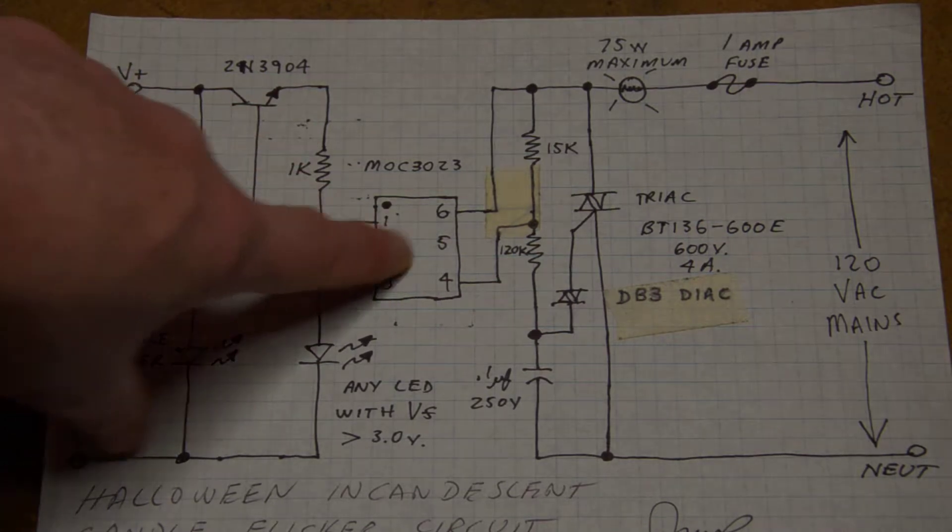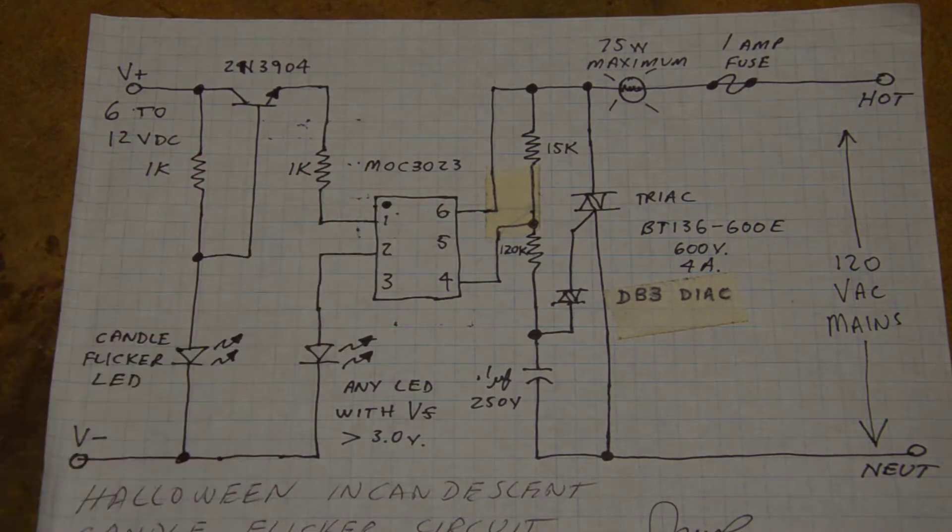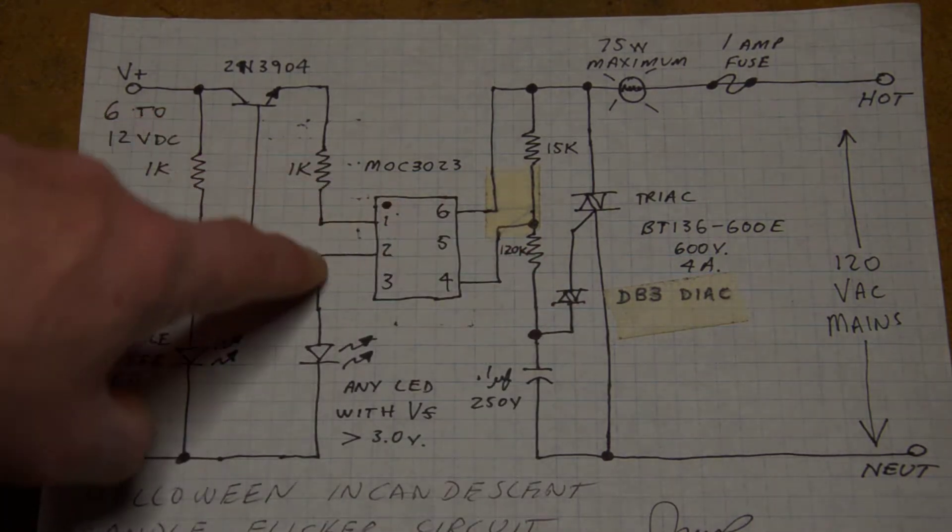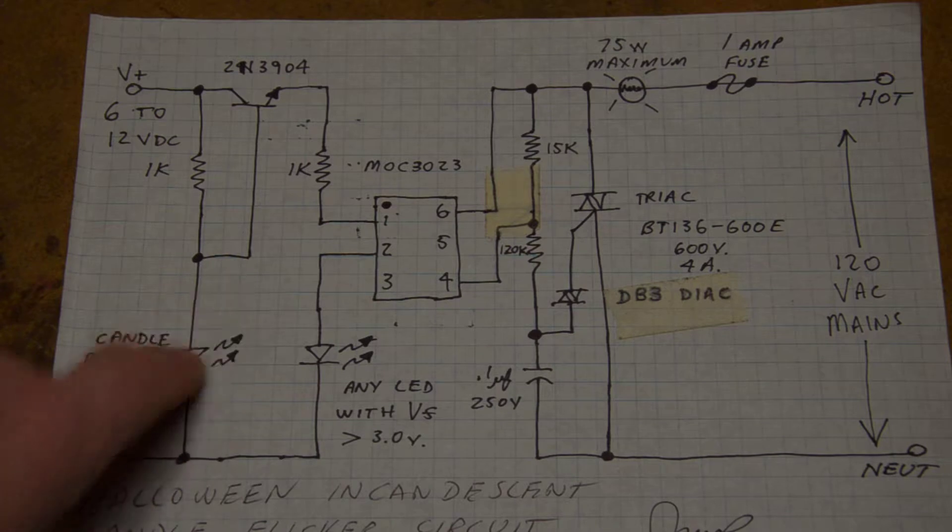That goes into the input side of an MOC3023 which is an optical coupler with a triac output, and it comes out and goes through a LED. This LED is kind of important because this thing has a fixed output voltage.